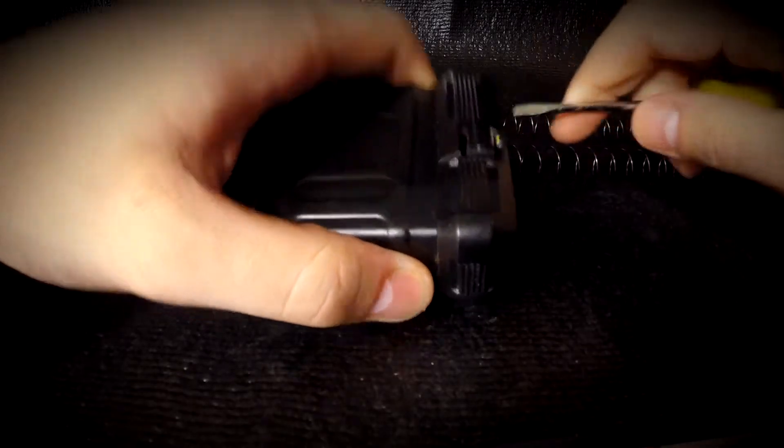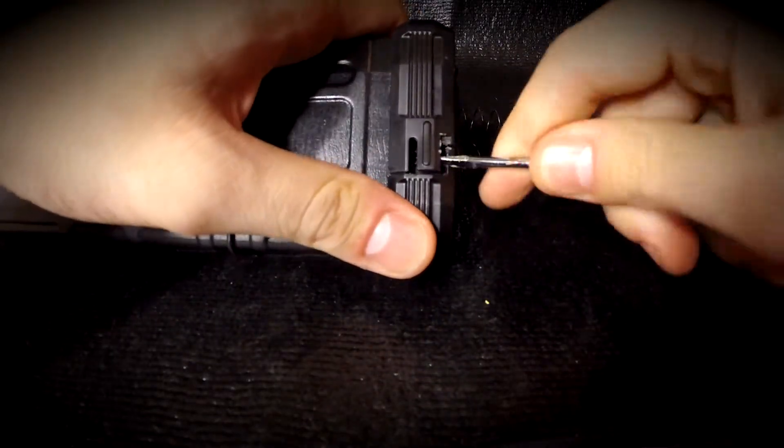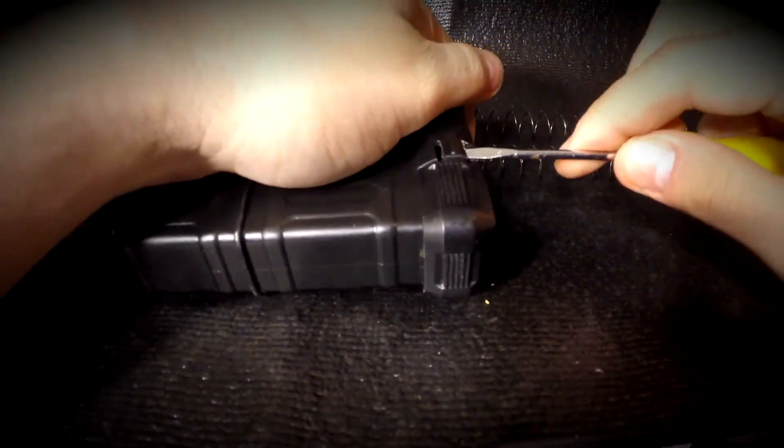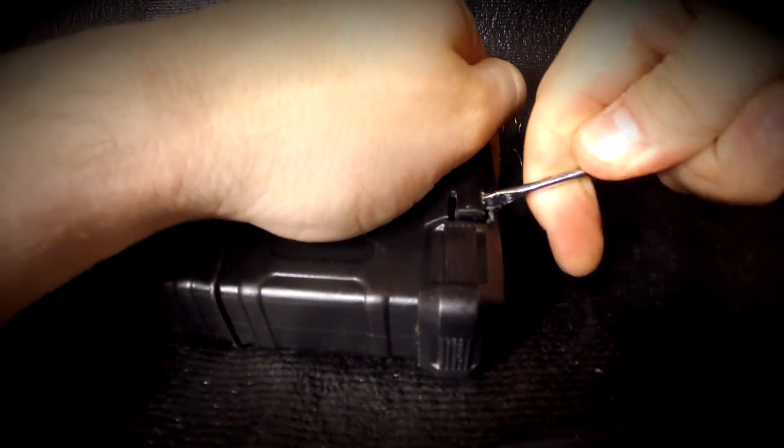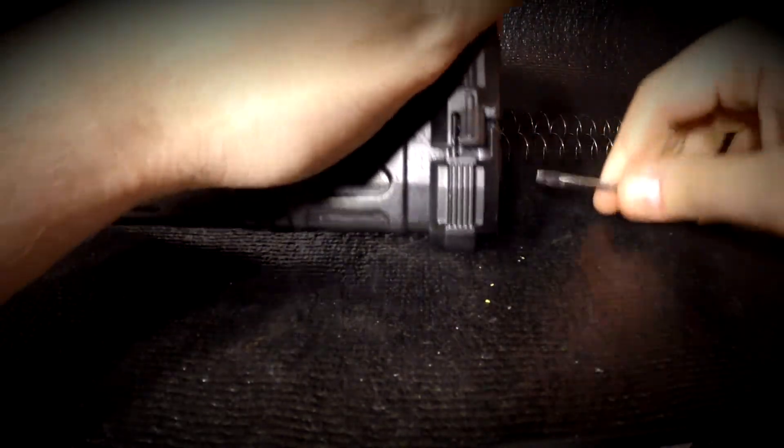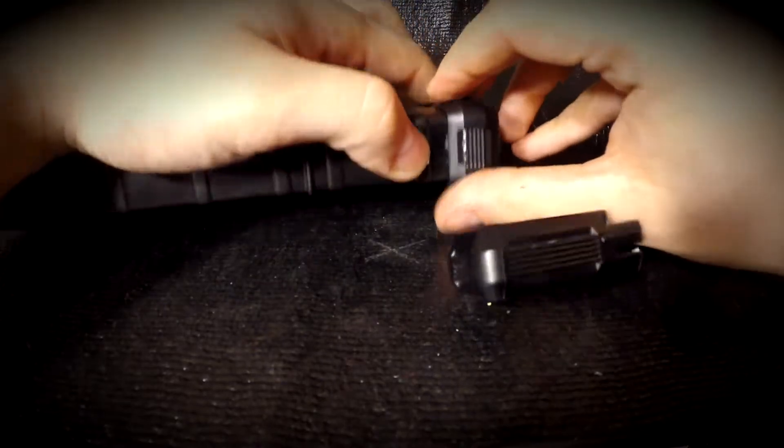So using your flathead screwdriver, you pop one side, pop the other side, and sometimes you've got to go back and forth between the two of them because some of them do like to go back on each other. Like that one just did there. And it's just a matter of getting these tabs up and getting them to stay up. This one seems to be wanting to be a little more difficult, but there we go. Just like that.